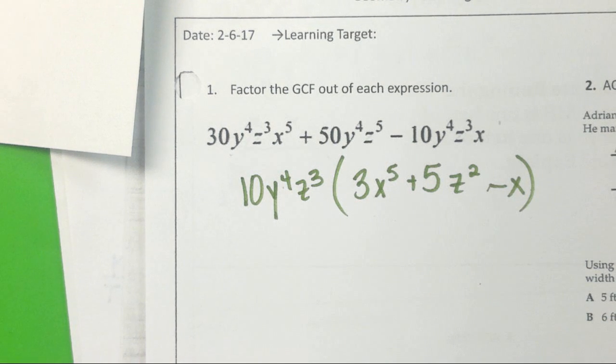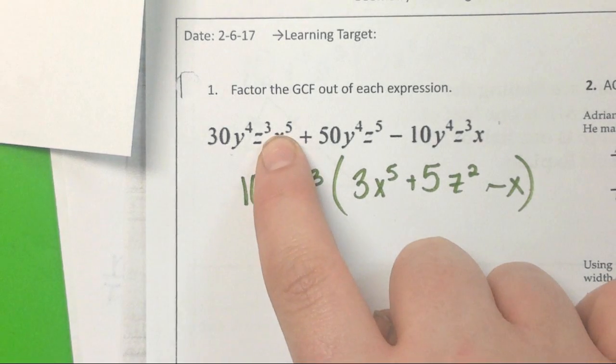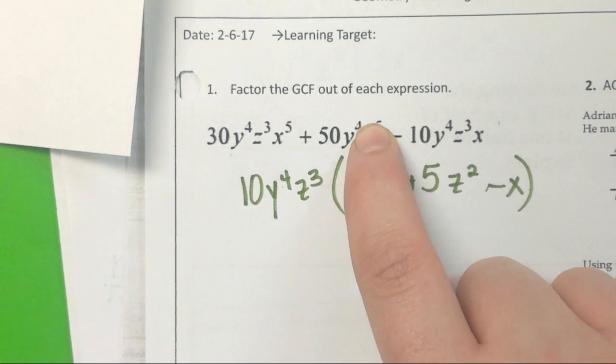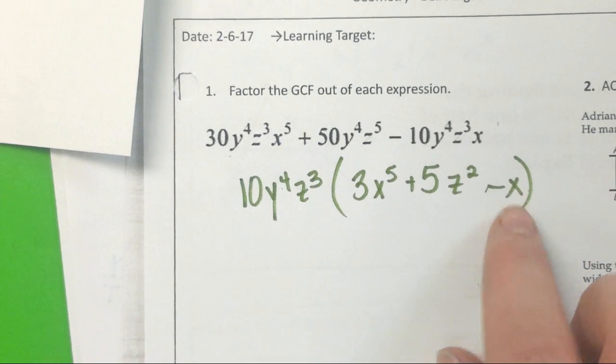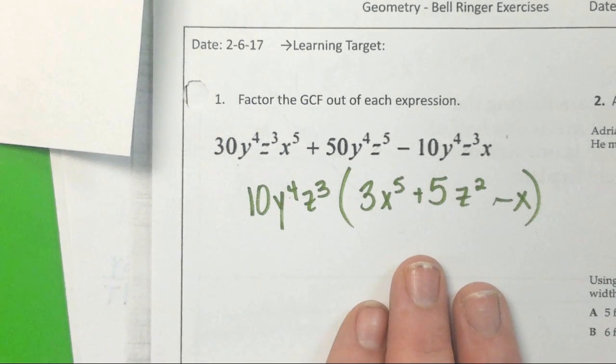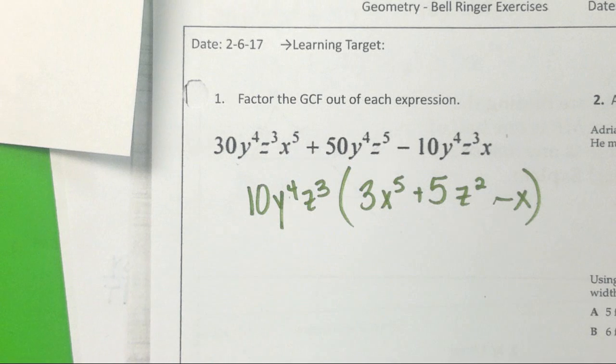I know she's right with her numbers. Now to check her variables. Y to the fourth, z to the third, x to the fifth. That's exactly what that one had. Y to the fourth, z to the fifth, because 3 plus 2 is 5. Correct. And then the last one, y to the fourth, z cubed, x. Oh yeah, she's got this down.